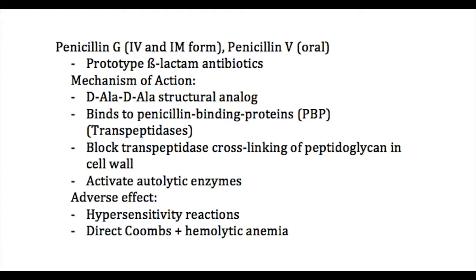When we talk about penicillin, we have to know that there's the IV formulation, which is penicillin G, and there's the oral formulation, which is penicillin V. The easiest way to remember that is alphabetical order: IV comes before oral — I comes before O — and G comes before V. So penicillin G goes with IV, and penicillin V goes with oral. Penicillin works by binding to the PBPs — penicillin binding proteins — which are required for the cross-linking of the peptidoglycan subunits. Therefore, it is a bactericidal drug because it causes osmotic lysis of the cell.